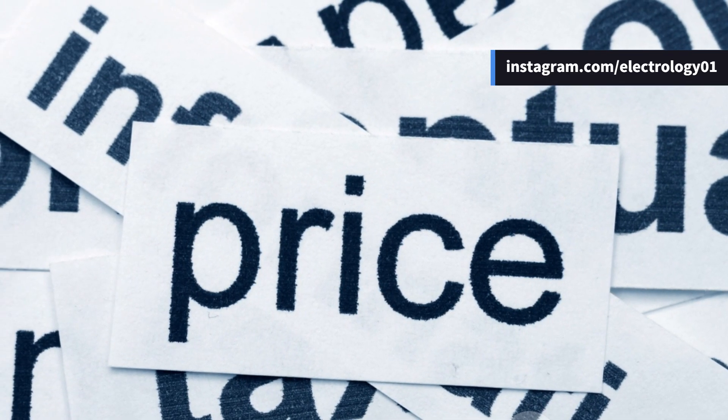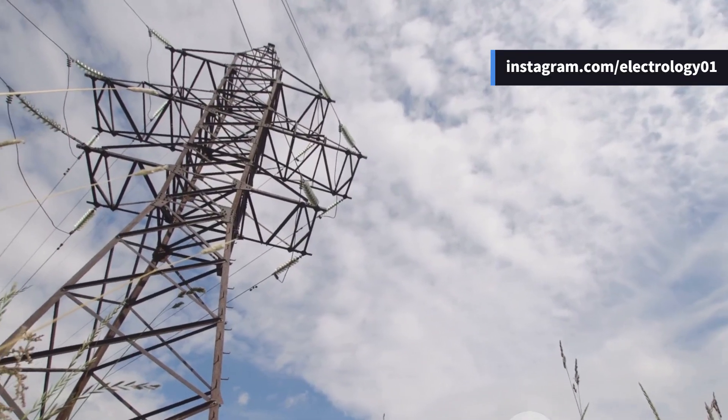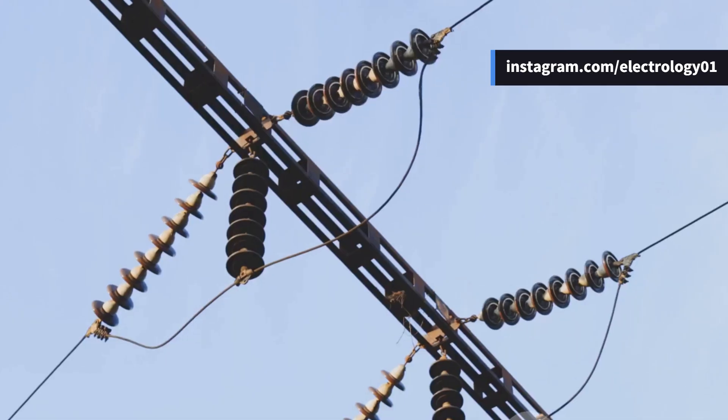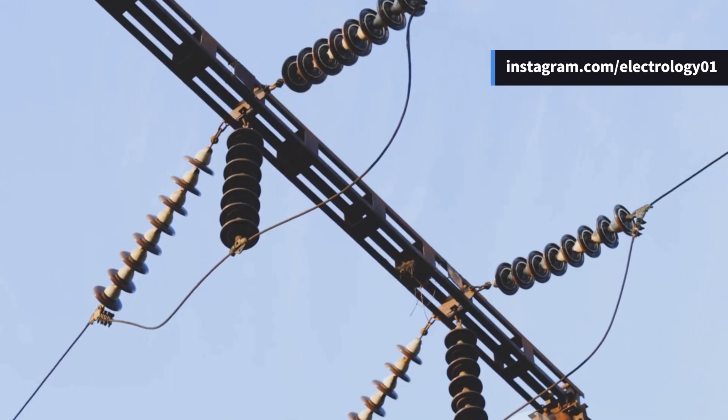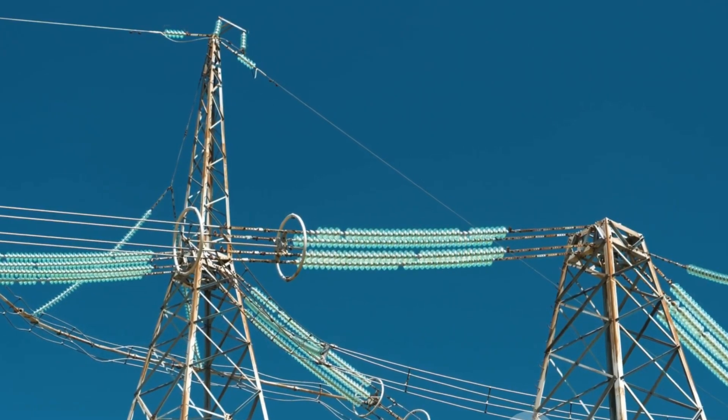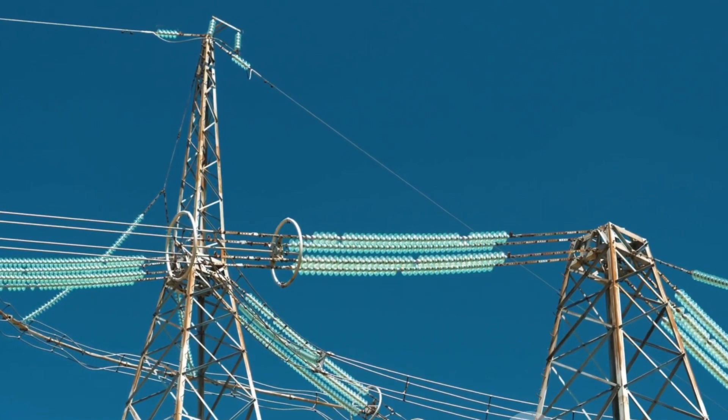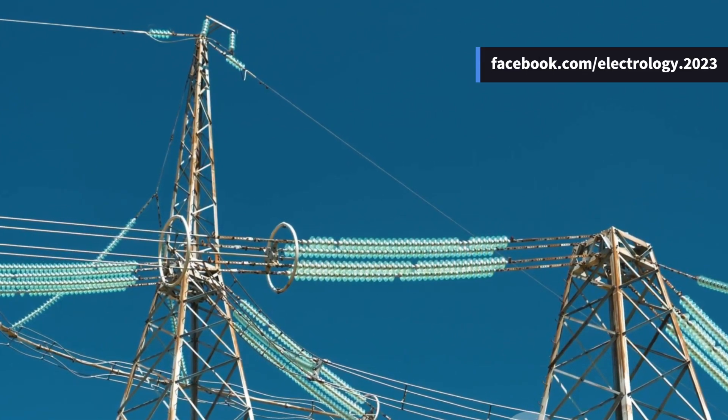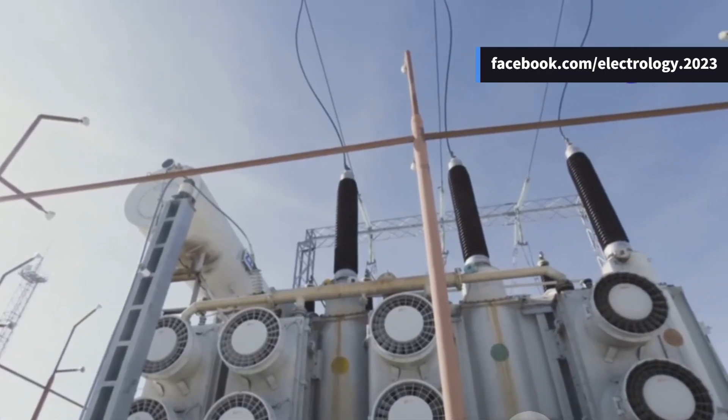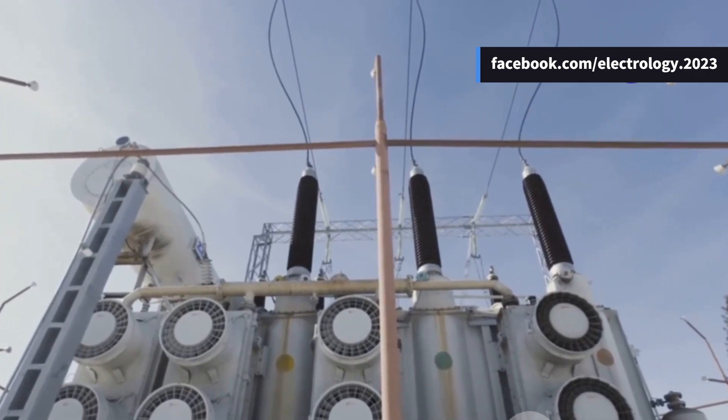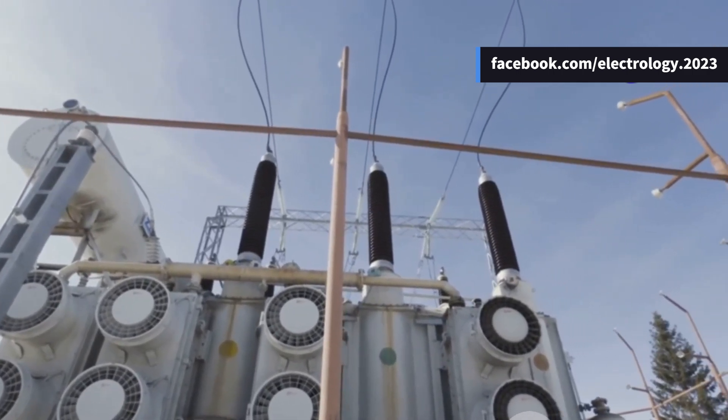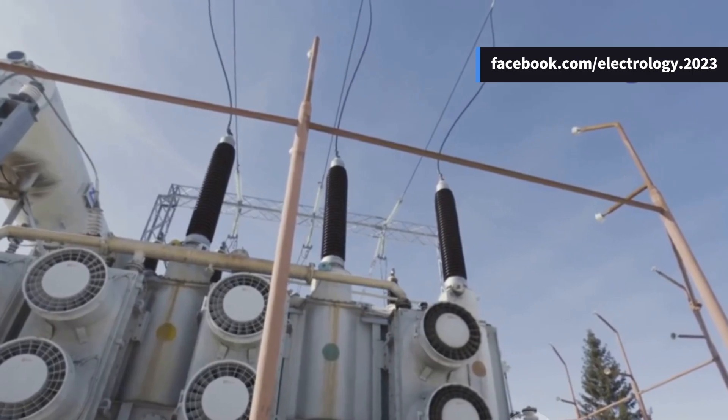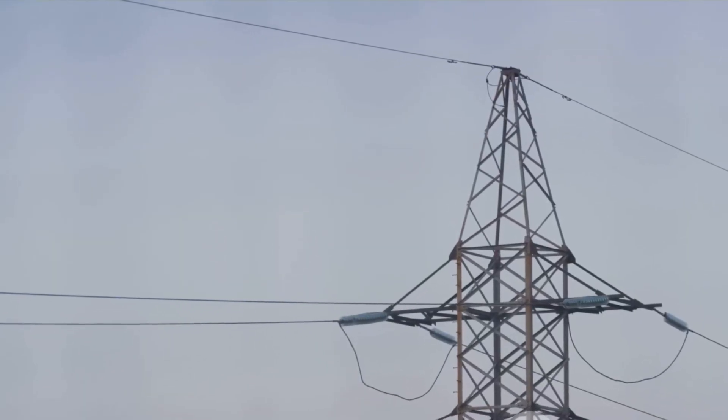Now everything has a price, and high voltage transmission is no exception. First, the cost of insulation increases. The conductors must be spaced further apart and better insulators must be used to handle the higher voltage stress. Second, the cost of terminal equipment increases, including transformers, switchgear, surge arrestors, and more. These costs can sometimes outweigh the savings in conductor material, especially at extremely high voltages.